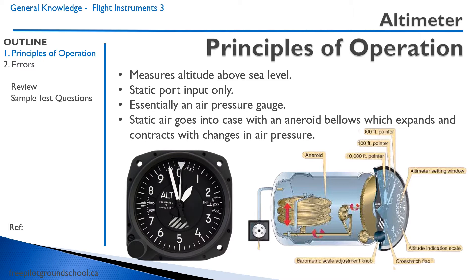Static air goes into the case, as we can see here by the static port. Inside there's an aneroid bellows — we can think of that kind of like a balloon — and that's going to expand and contract with changes in the air pressure in the case. The size of this bellows is then transferred by a gear system to the needle of the altimeter to indicate the altitude.